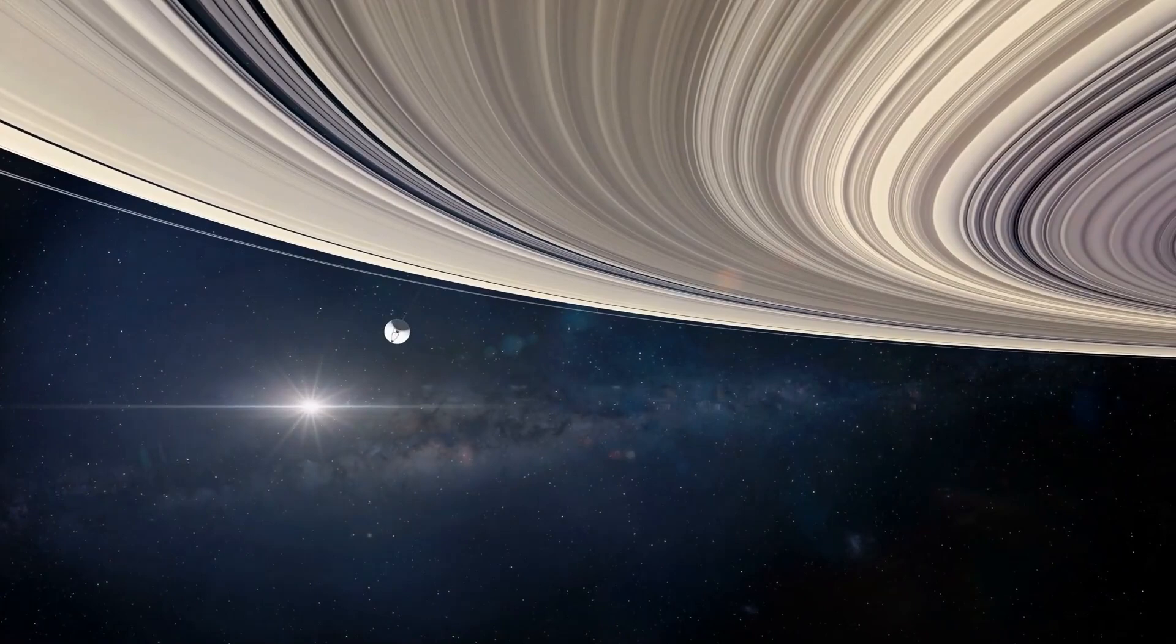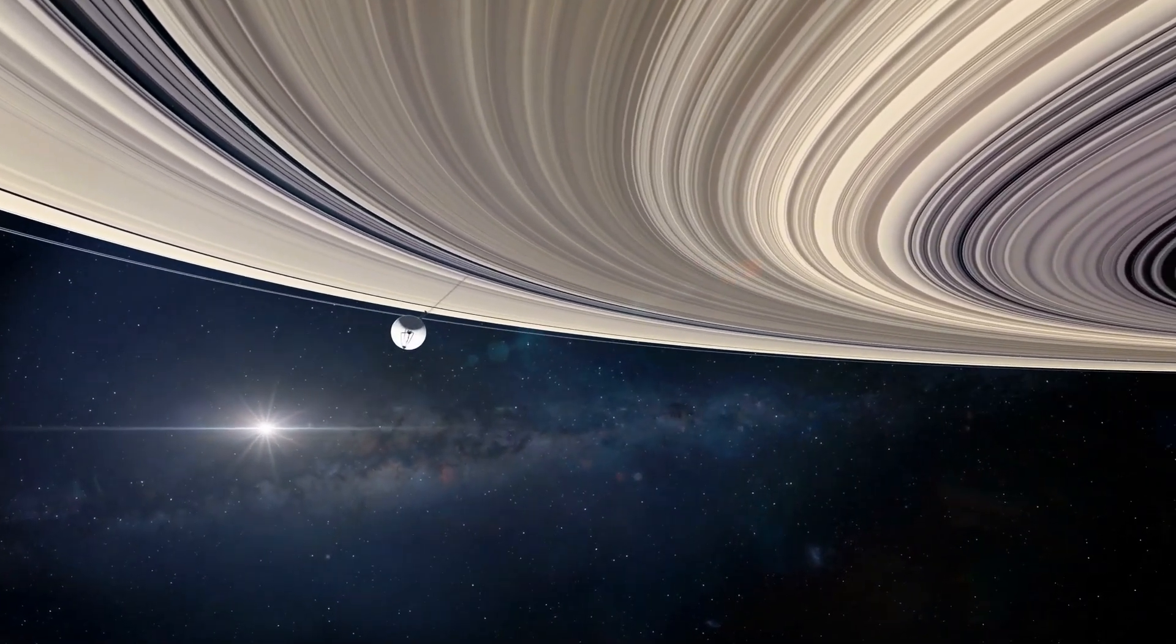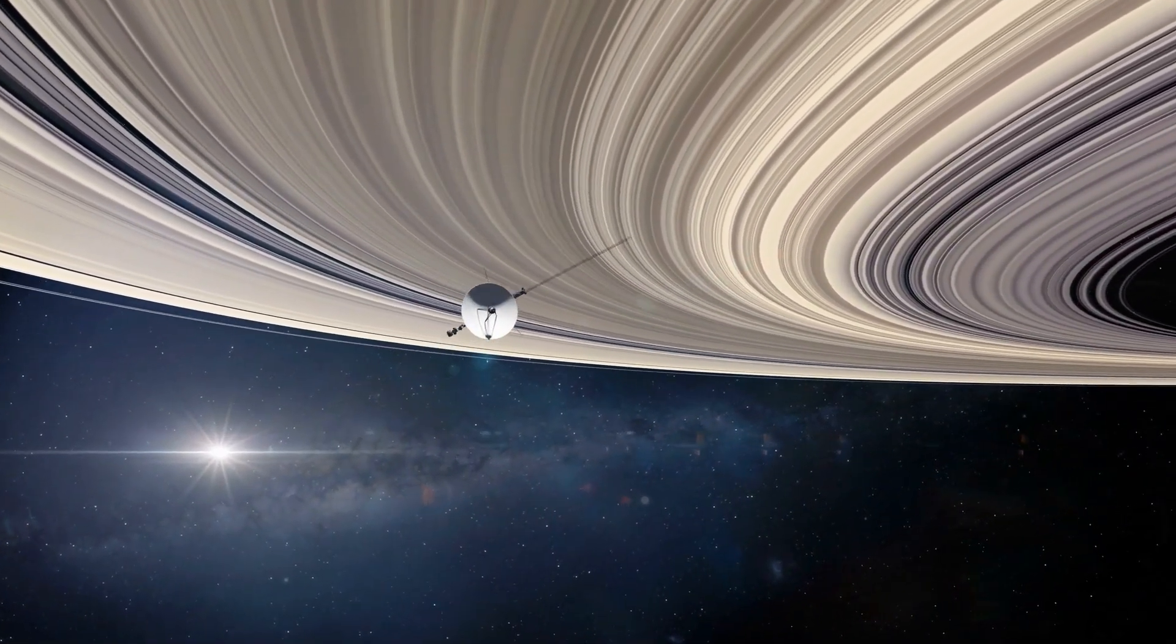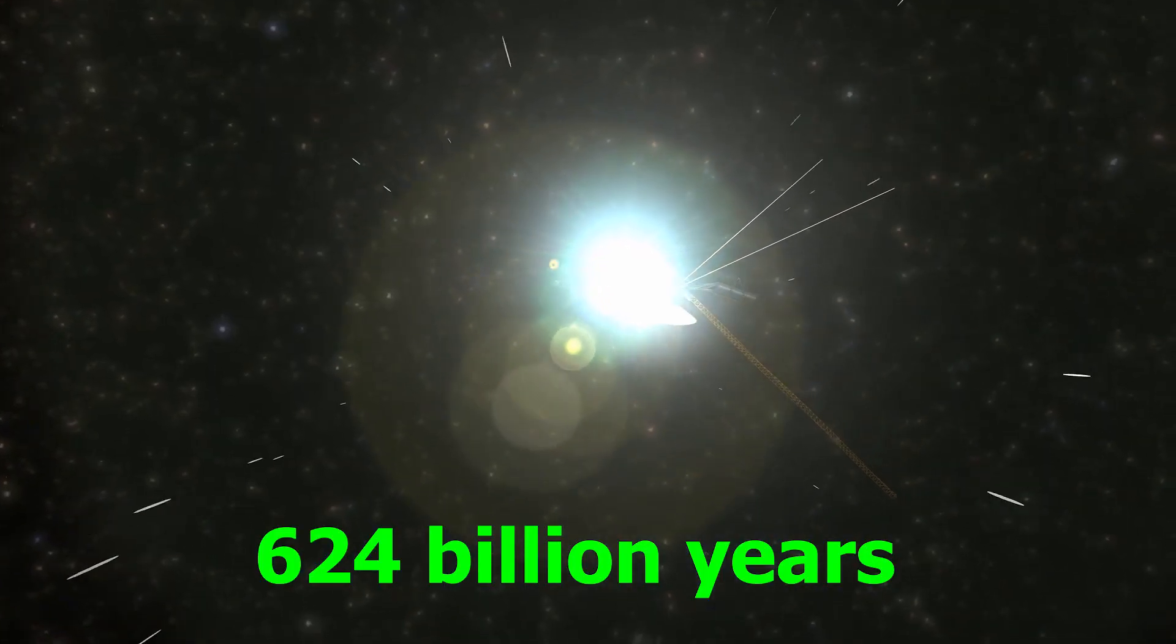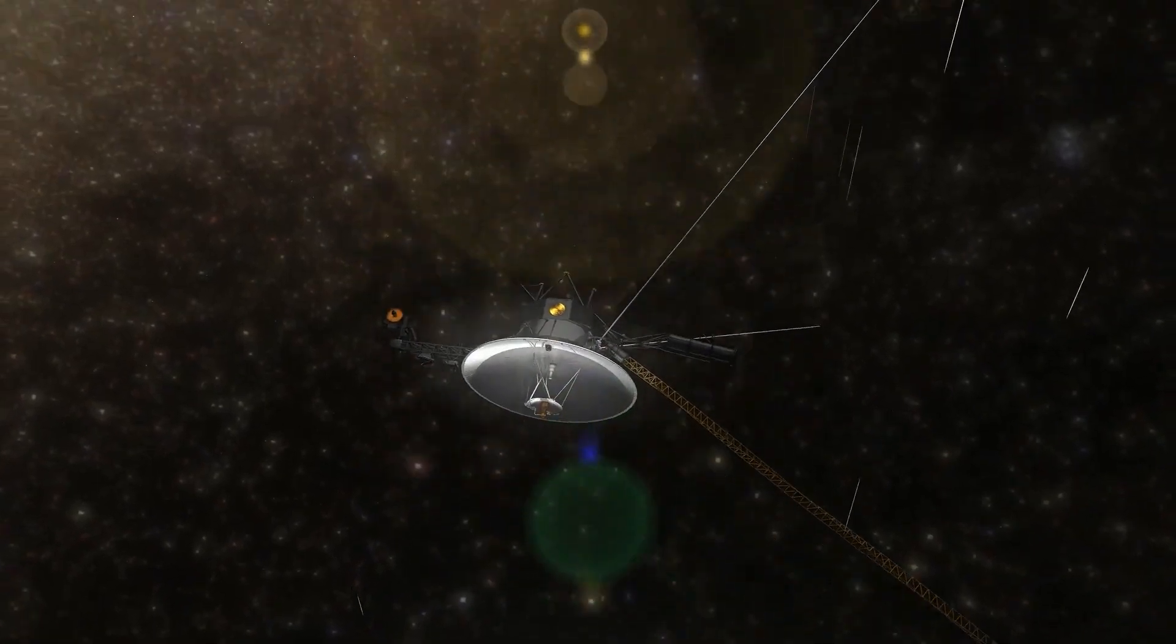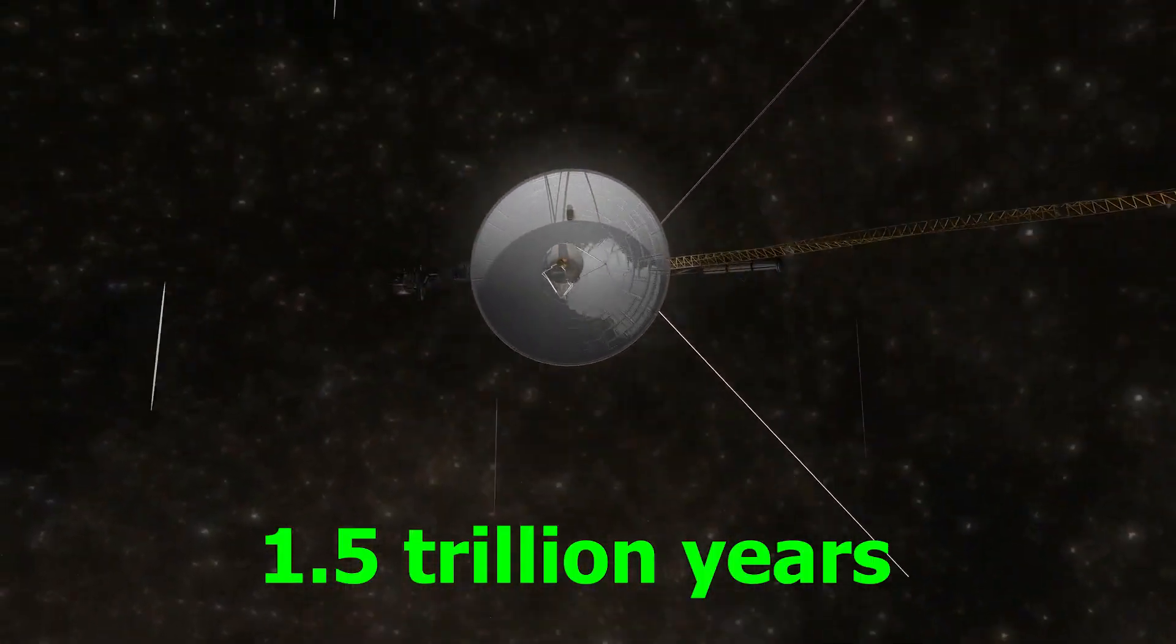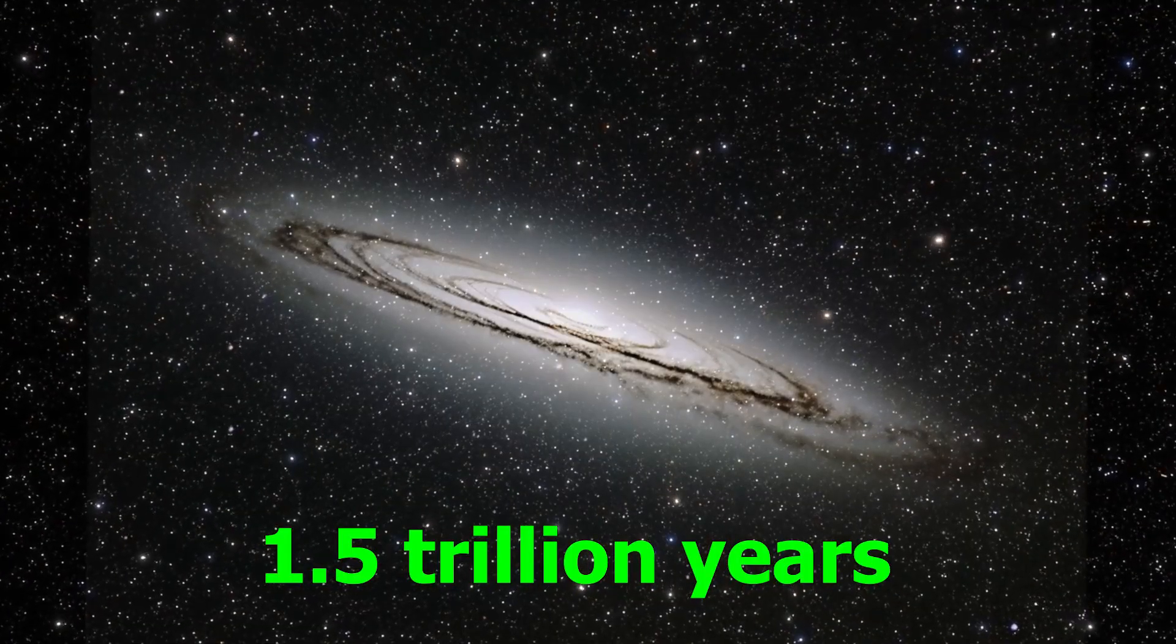And guess what? To arrive at GN-z11, the farthest known galaxy, Voyager 1 would require 624 billion years. And hold on tight, because covering the observable universe would demand 1.5 trillion years at Voyager 1 speed.